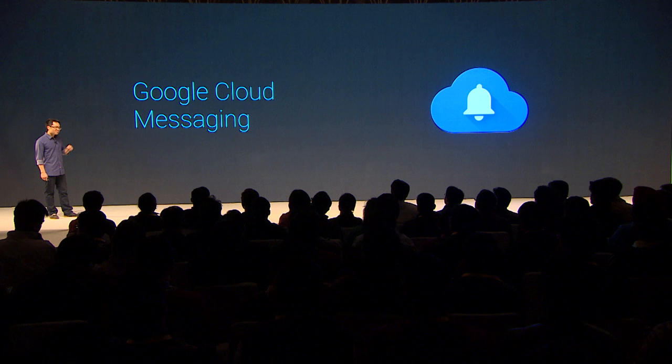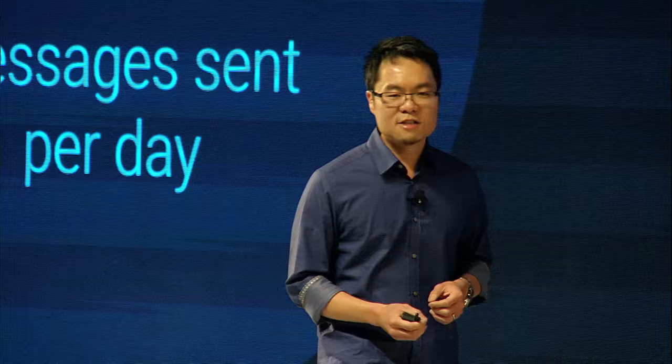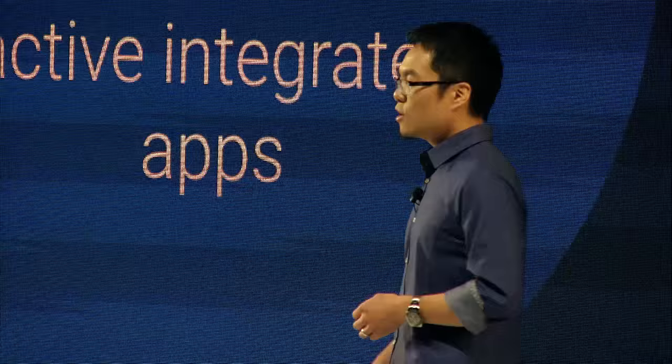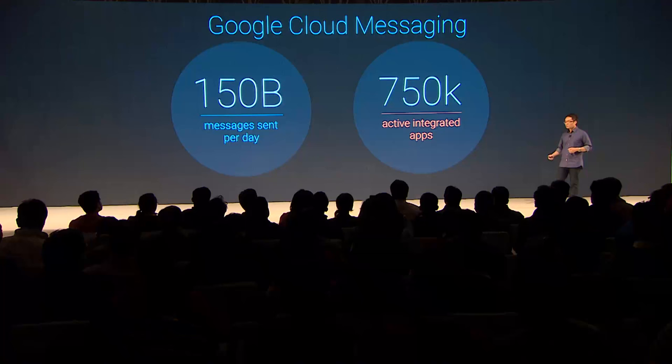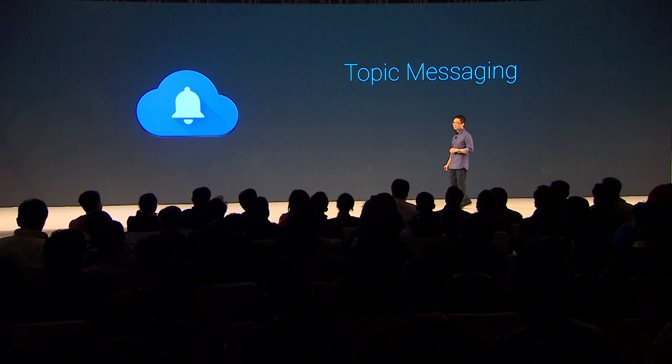Another great way to drive re-engagement is by using push notifications, and this is where Google Cloud Messaging comes in. Google Cloud Messaging lets you send messages from the cloud to your devices. We've seen incredible traction from developers using this — today, there are over 150 billion messages processed each day through Google Cloud Messaging, and there are over 750,000 apps using it. We're working really hard to continue to improve the scalability so that you don't have to manage your own infrastructure. Over the past months, we've expanded Google Cloud Messaging to not only work on Android, but also on Chrome and iOS.